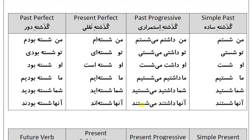آن‌ها داشتند می‌شستند. گذشته نقلی (Present perfect): من شسته‌ام، تو شسته‌ای، او شسته است، ما شسته‌ایم، شما شسته‌اید، آن‌ها شسته‌اند. گذشته دور (Past perfect): من شسته بودم، تو شسته بودی، او شسته بود، ما شسته بودیم، شما شسته بودید.